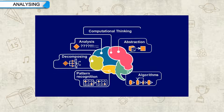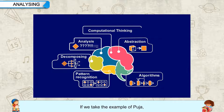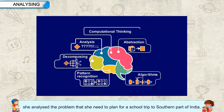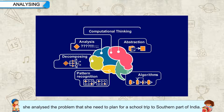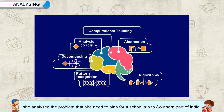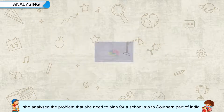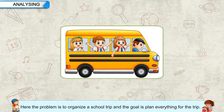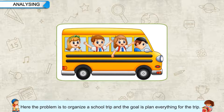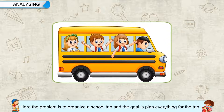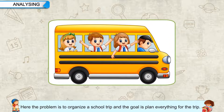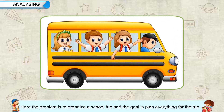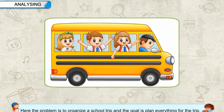Let us understand how we solve a problem using the elements of Computational Thinking. Analyzing: taking the example of Pooja, she analyzed the problem that she needed to plan for a school trip to the southern part of India. The problem is to organize a school trip, and the goal is to plan everything for the trip.